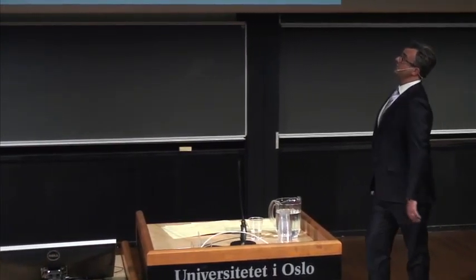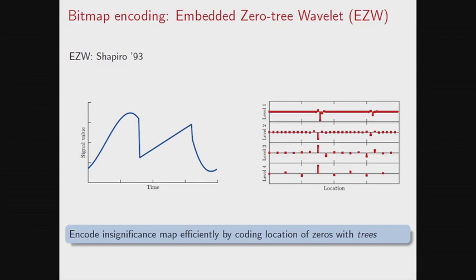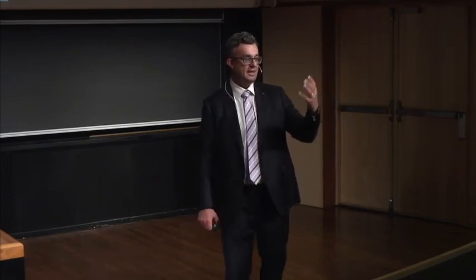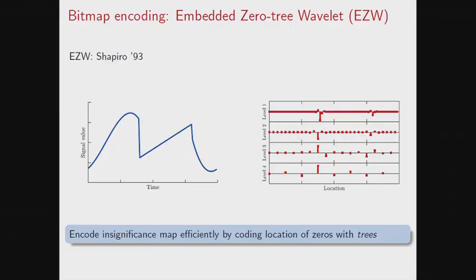There are many ways to think about encoding. I'll talk about the Embedded Zerotree Wavelet (EZW) of Shapiro — a paper from 1993. The key idea was that when nothing happens in a patch, like a patch of blue sky, we have a lot of very small coefficients in the wavelet pyramid and we're not going to bother transmitting them. EZW is not what's used in JPEG 2000 — they use a different coder called EBCOT — but we can see how the wavelet pyramid itself leads to a very clever encoding scheme.